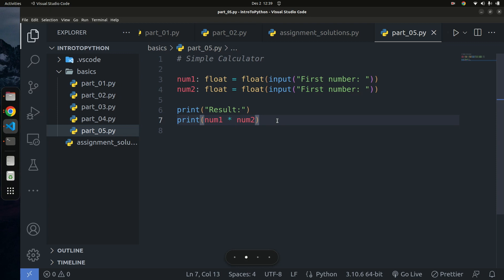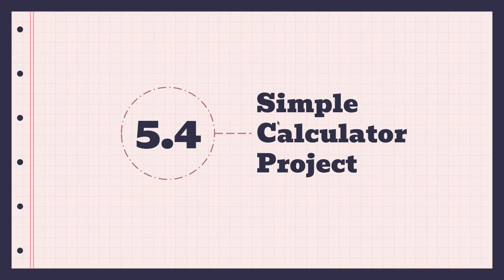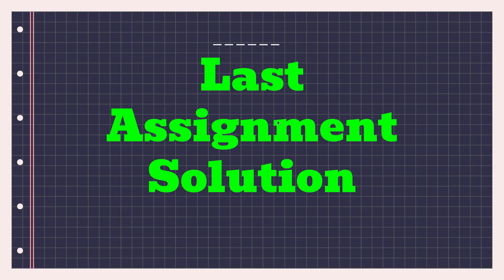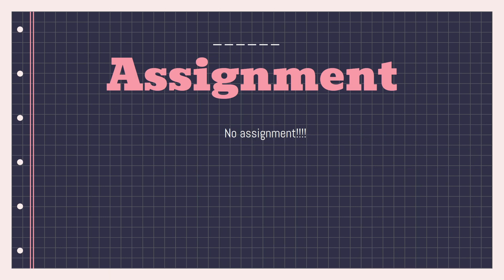If you want to multiply the numbers, just use the multiplication sign. For example, 5 times 4 gives 20.0. That's how you create a simple calculator in Python. There's no assignment for this video, but you can extend the program to support division and other operations. Thanks for watching — if you're new, please consider subscribing and sharing. See you in the next one!